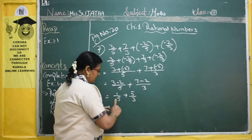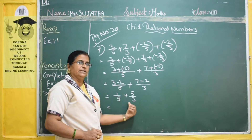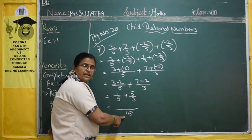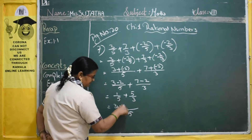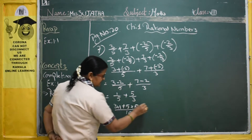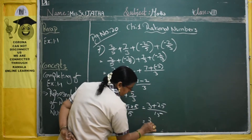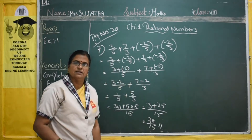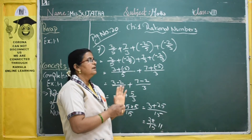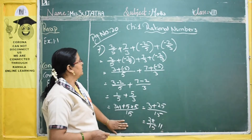Now again we have to take the LCM. For 5 and 3, is there any common table? No. So you should multiply: 5 threes are 15. LCM is 15. In the 5 table, 15 comes 3 times. So 3 into 1. In the 3 table, 15 comes 5 times. 5 into 5. Now, 3 ones are 3 plus 5 fives are 25, giving 28/15. So 28/15 is the answer for the 7th sum.